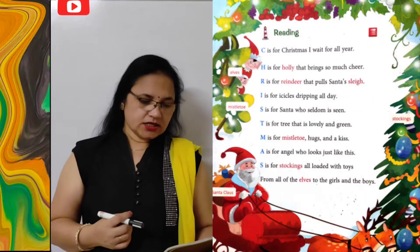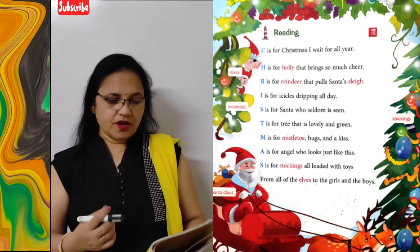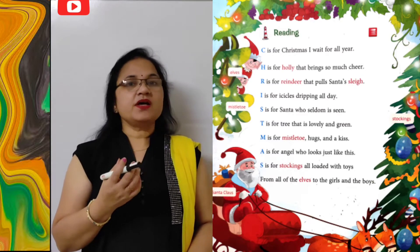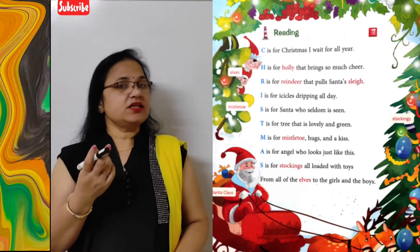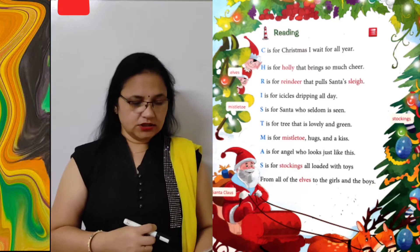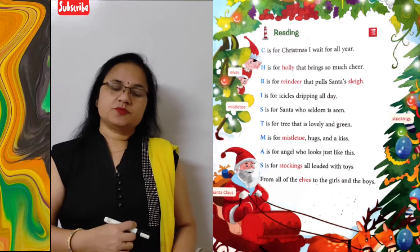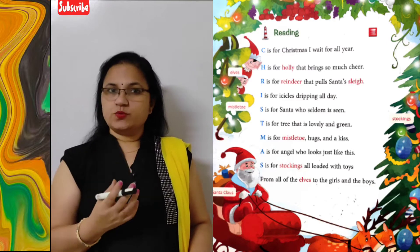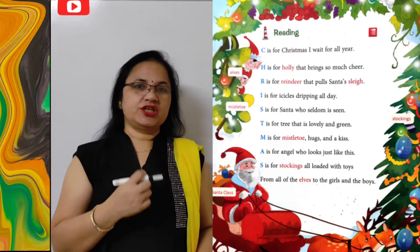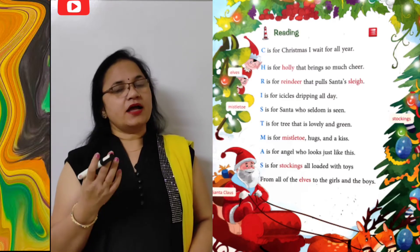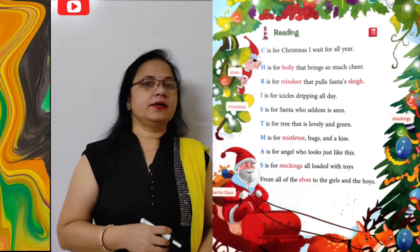Now students, let's start the poem. C is for Christmas — I'll wait for all year. In Christmas, the first letter is C, so C stands for Christmas. Christmas means the festival which Christians celebrate, and the poet is saying that I'll wait for it the whole year.